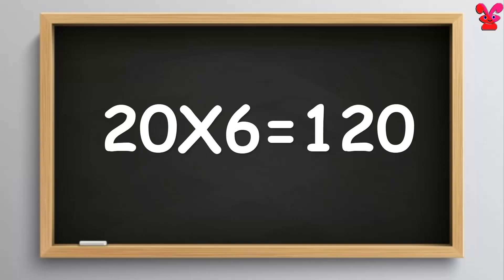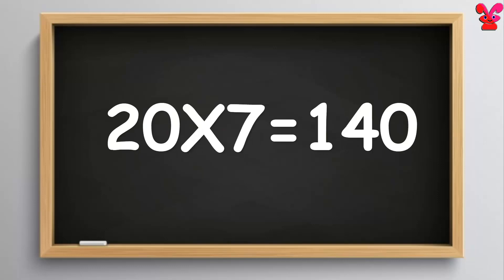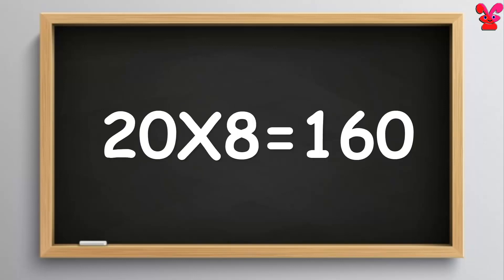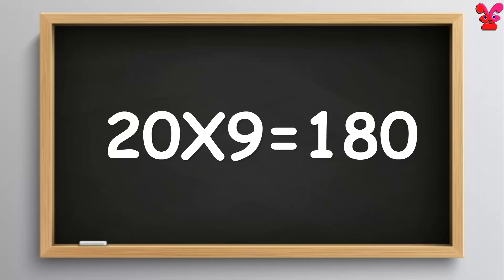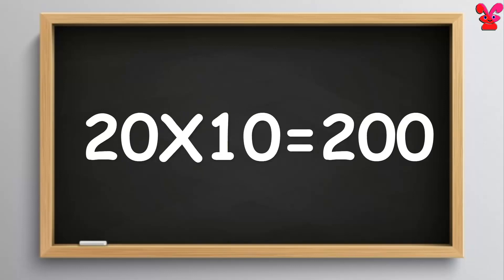2 sixes are 120. 2 sevens are 140. 2 eights are 160. 2 nines are 180. 20 tens are 200.